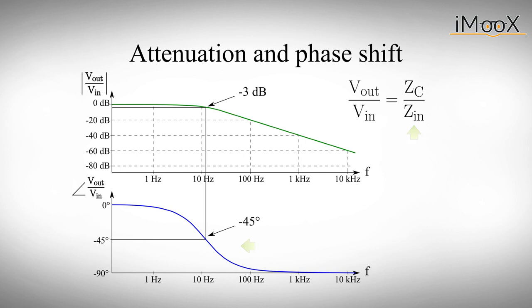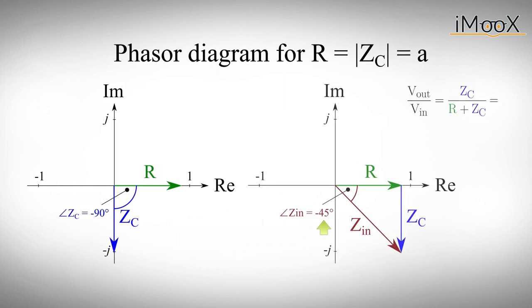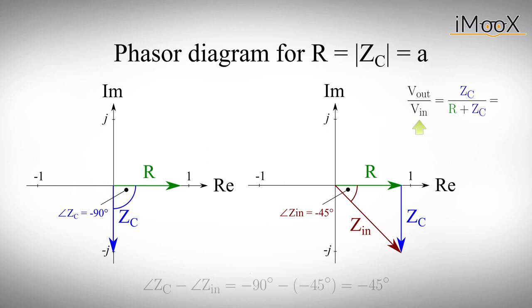Mathematically speaking, a division of two phasors yields a division of their lengths and a subtraction of their angles. This might seem a little weird, so we calculate one particularly interesting point together. Let's assume a signal frequency where the impedance of our resistor and our capacitor are exactly the same. This will lead to an angle of minus 45 degrees for Zin. If we want to calculate the angle of Vout over Vin, we have to do the following subtraction. The angle of Zc minus the angle of Zin is minus 90 degrees minus minus 45 degrees, which is equal to minus 45 degrees.